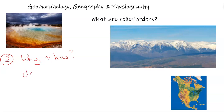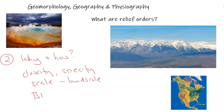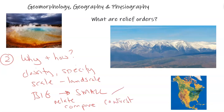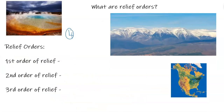We need to classify and specify landform scale from big to small, so we can relate, compare, and contrast landforms and understand how they interact as part of a big system — the spheres and their interactions and influences. This also classifies the land scale and the landscapes. The scale we use is called relief orders.